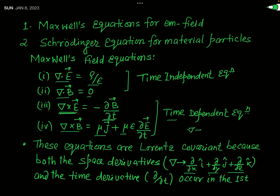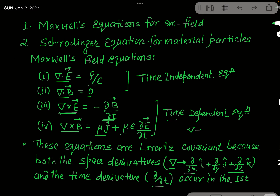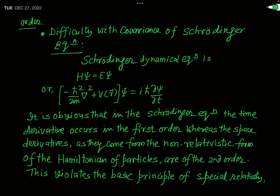The invariance of Maxwell's equations has actually been discussed in detail in relativistic electrodynamics. You can see the playlist on my channel for Relativistic Electrodynamics, where you will find 12 videos, one of which is related to the covariance of Maxwell's field equations under Lorentz transformation. Maxwell's equations are Lorentz covariant because both the space derivative (del, which is first order) and the time derivative (∂/∂t, first order) occur in the first order.